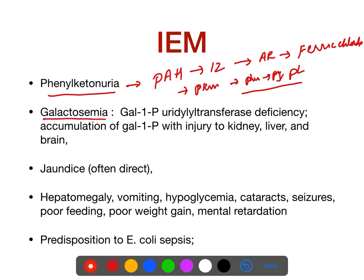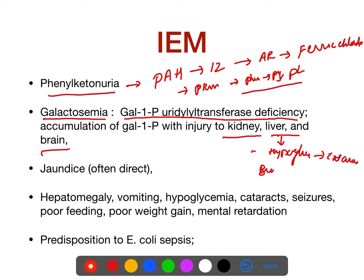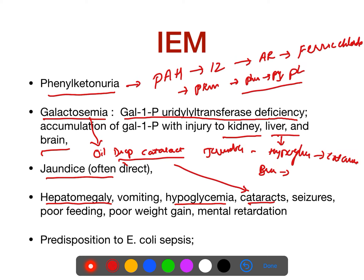What is galactosemia? It is due to galactose-1-phosphate uridyl transferase deficiency. It causes injury to the kidney, liver, and brain, resulting in hypoglycemia, cataract (oil drop cataract), jaundice, hepatosplenomegaly, poor feeding, poor weight gain, and mental retardation. Importantly, galactosemia babies are more prone to E. coli sepsis.